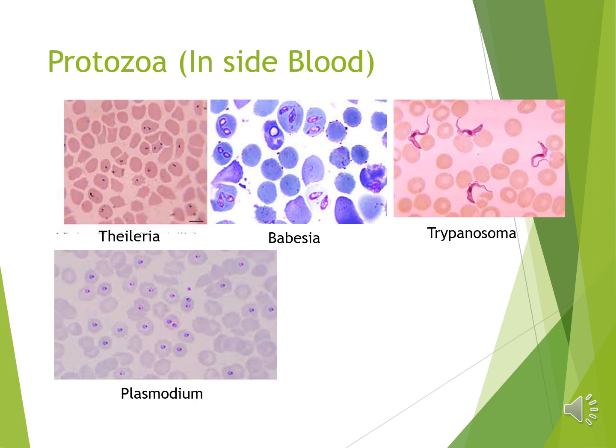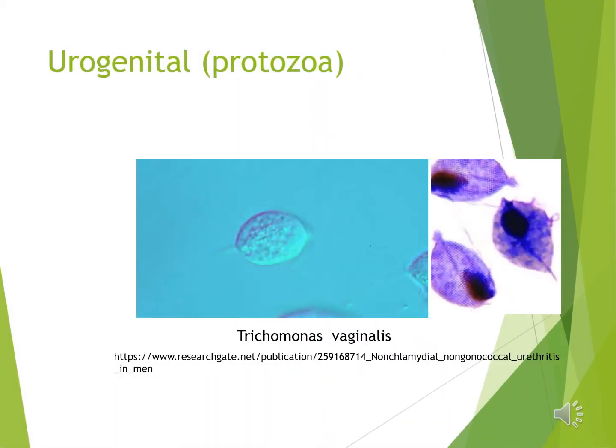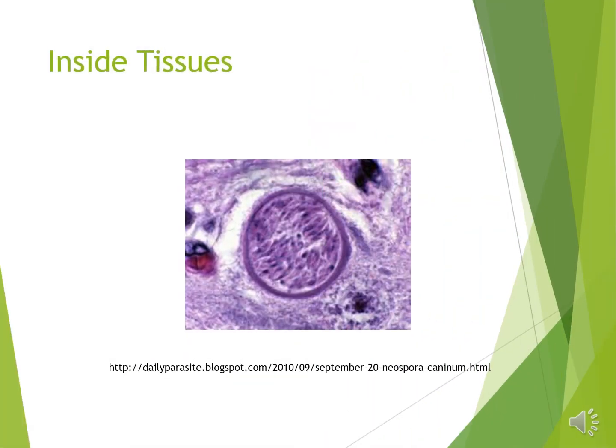Here you can find protozoa present inside the blood or blood fluid — these include Theileria, Babesia, trypanosomes, and Plasmodium. These are well known because many people, animals, and cattle are infected by these parasites. Protozoa present in the urogenital system mostly infect males and females — including human beings and domestic animals — and can cause abortion and infertility. Neospora caninum, previously mistaken for Toxoplasma gondii, is now clearly identified and can be of zoonotic importance.